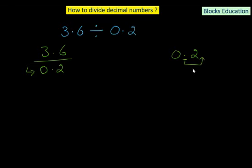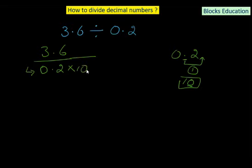In order to change 0.2 into an integer or whole number, we have to move the decimal point one place to the right, which means we have to multiply by 10. As per the math rule, if you perform an operation with the denominator, you have to perform the same operation with the numerator as well. So if you multiply by 100, you multiply 100 above; if by 1000, then 1000 above. In this case we multiply by 10 in the denominator, so we multiply by 10 in the numerator as well.